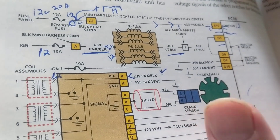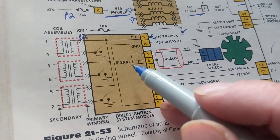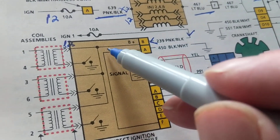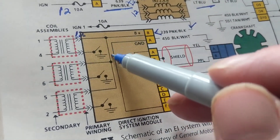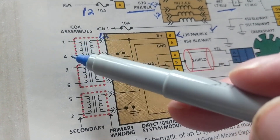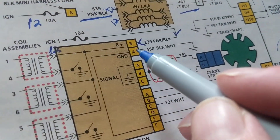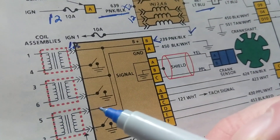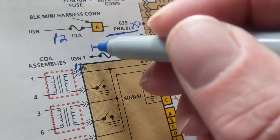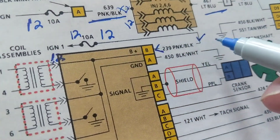Now let's say we believe we have working fuel injectors — we measured, we did a balance test, injectors are working — but we have a problem with spark. No spark from the ignition coil. Look at this: the ignition coil gets B-plus fed to one coil, another one, and another one. Here are cylinders one and four, three and six, five and two. What would knock out all these ignition coils in one shot? Right away — the fuse. Let's say we measure 12 volts here and 12 volts on the other side — this fuse is good.